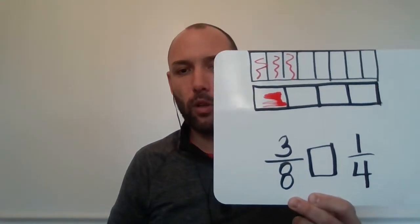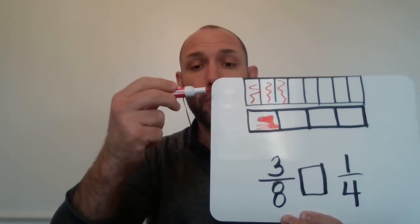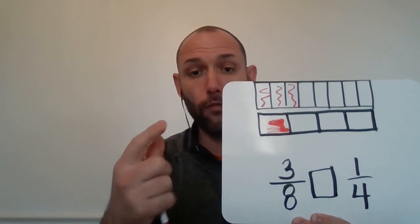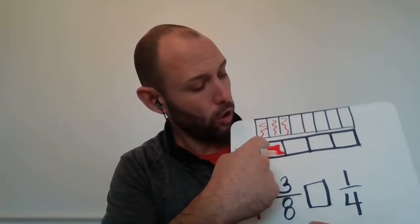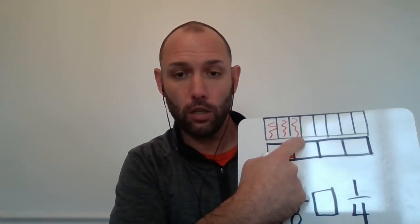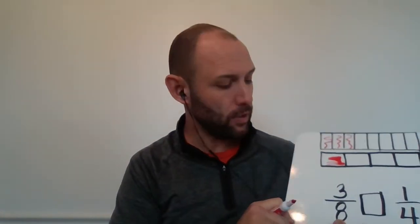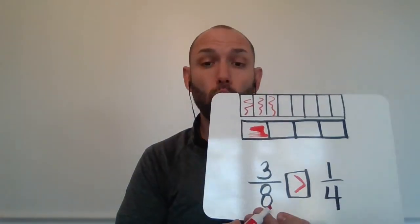Well, in this case, when I'm looking at the pictures, I can tell that three eighths is bigger than one fourth. And that's because, look at my picture. Notice how the colored part is longer on the three eighths than it is the one fourth. So in this case, I would say three eighths is greater than one fourth. Now, this whole greater than, less than stuff...